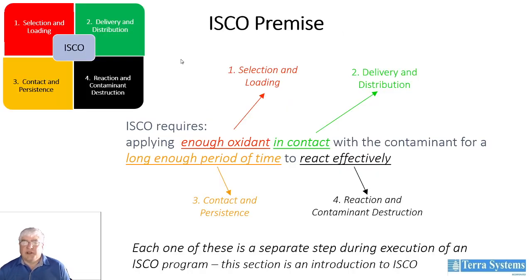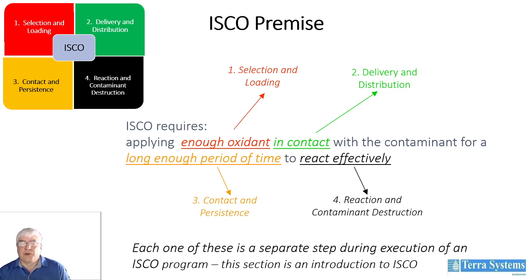If we look at ISCO as a process from the thousand-foot level, ISCO really is four steps, as shown here. ISCO requires applying enough oxidant — dealing with selection and loading — in contact, dealing with delivery and distribution, with a contaminant for a long enough period of time — which deals with contact and persistence — to react effectively, dealing with reaction and contaminant destruction.